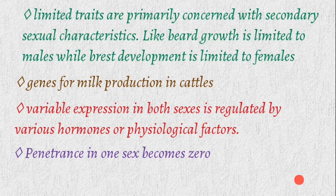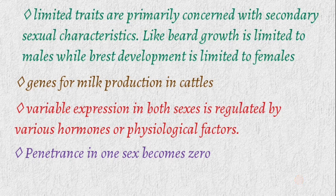In sex-limited traits, when one sex expresses a particular gene and the other does not, the penetrance of that gene in the non-expressing sex becomes completely zero. The sex possesses the gene but does not express it, so penetrance is nil. I hope you understood this lecture — please like and subscribe to the channel.